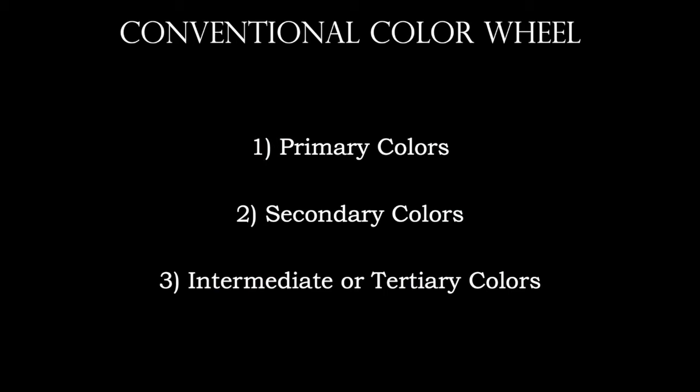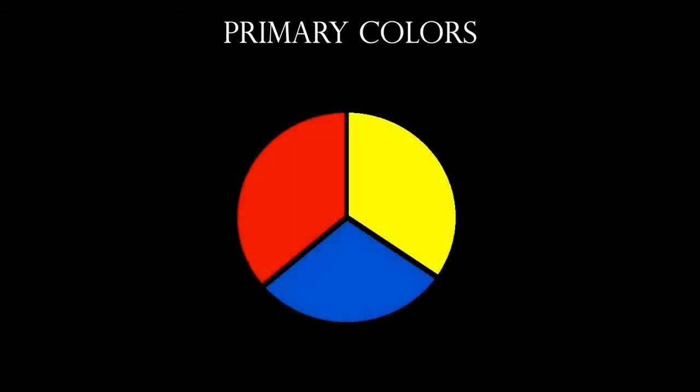On the conventional 12-step color wheel, number one stands for the primary colors, number two the secondary colors, and number three the intermediate or tertiary colors. The primary colors — designated by number one — are red, yellow, and blue. These are the foundation: no other colors can create them, and they cannot be mixed from other colors. They're at the top of the food chain for color.